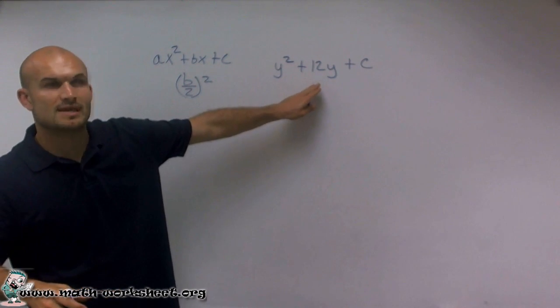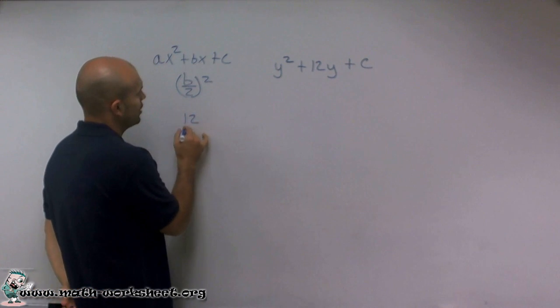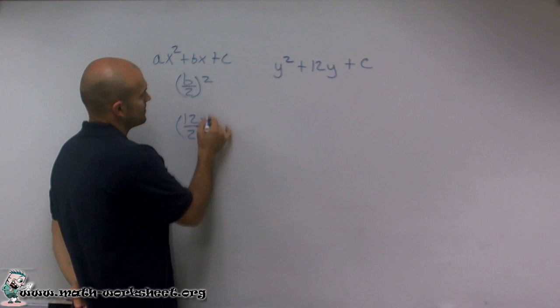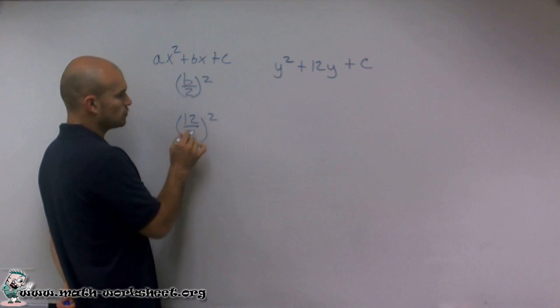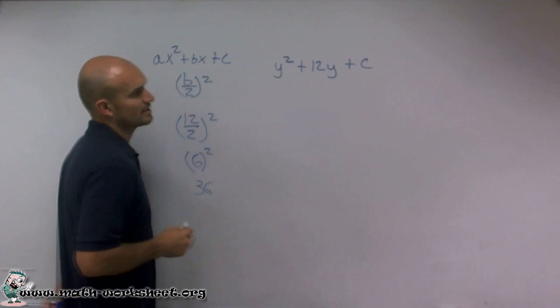So in this form, our b is 12. I'm going to take 12 divided by 2 and square it. Well, 12 divided by 2 gives me 6, and 6 squared leaves me with 36.